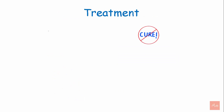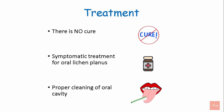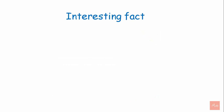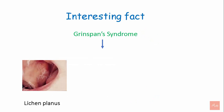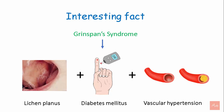Treatment: There is no particular cure for lichen planus; however, the symptoms can be treated with topical medicines. Proper cleaning of the oral cavity is advised. Grinspan syndrome is a group of diseases consisting of lichen planus, diabetes mellitus, and vascular hypertension.